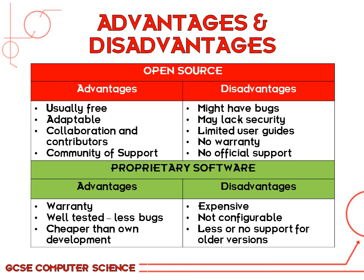Disadvantages of proprietary software include that it's often expensive. You can't configure it to however you want — you're stuck with that particular version. Also, as time goes on and versions get older, you get less or no support for those versions because the company wants you to buy the latest version and make more money from you.